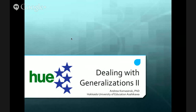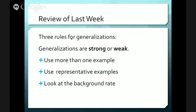This is dealing with generalizations too. A generalization is something where we're taking a small amount of data and using that to say something about a larger set or group. Last week we looked at three rules for generalizations. A generalization is weak if it has little support or little reason to think the generalization is correct.